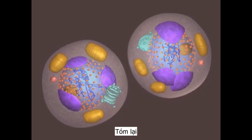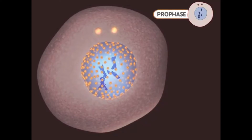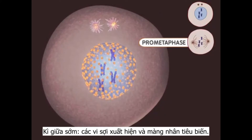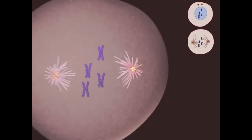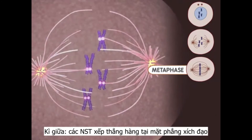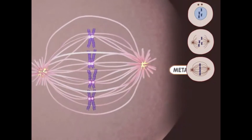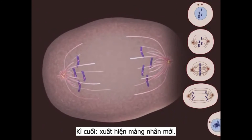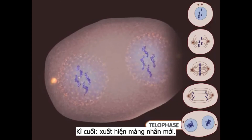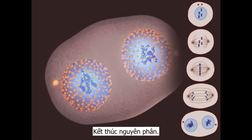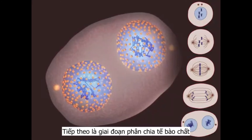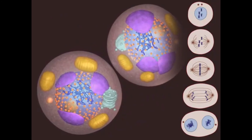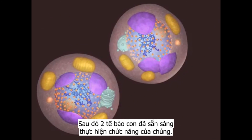Let's watch the process one more time. Mitosis begins with prophase — notice the DNA condensing into chromosomes. Microtubules appear during prometaphase, and the nuclear membrane breaks down. Metaphase occurs when the chromosomes are aligned at the center of the cell. During anaphase, the chromosomes are moving apart. The telophase stage is marked by the appearance of new nuclear membranes. This is the end of mitosis. Finally, the splitting of the cell occurs during cytokinesis. The two new cells are now ready to grow and perform their specialized functions.